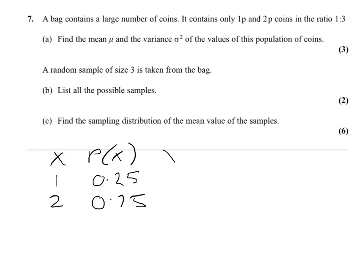Now to work out the mean and variance, we're going to need xP(x) for the mean and x²P(x) for the variance. So 1 times 0.25 is 0.25, 2 times 0.75 is 1.5. To do the x squared, you've got to do x times xP(x) to get x²P(x). That's 1 times 0.25, which is 0.25, and 2 times 1.5, that gives me 3.